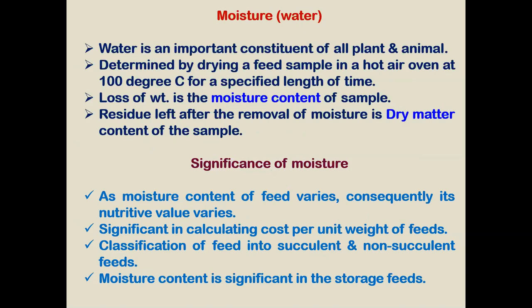What is the significance of moisture? Water is one of the most important constituents of all plant feeds. Moisture content is determined by drying in a hot air oven at 100 degrees centigrade for a specified length of time. The loss in weight is the moisture content of the sample, and the residue left after the removal of moisture is the dry matter content of that particular sample.